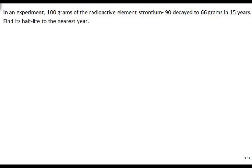So let's look at a particular example. We have 100 grams of the radioactive element strontium-90, and it decayed to 66 grams in 15 years. So to find its half-life, the first thing you have to do is find K.